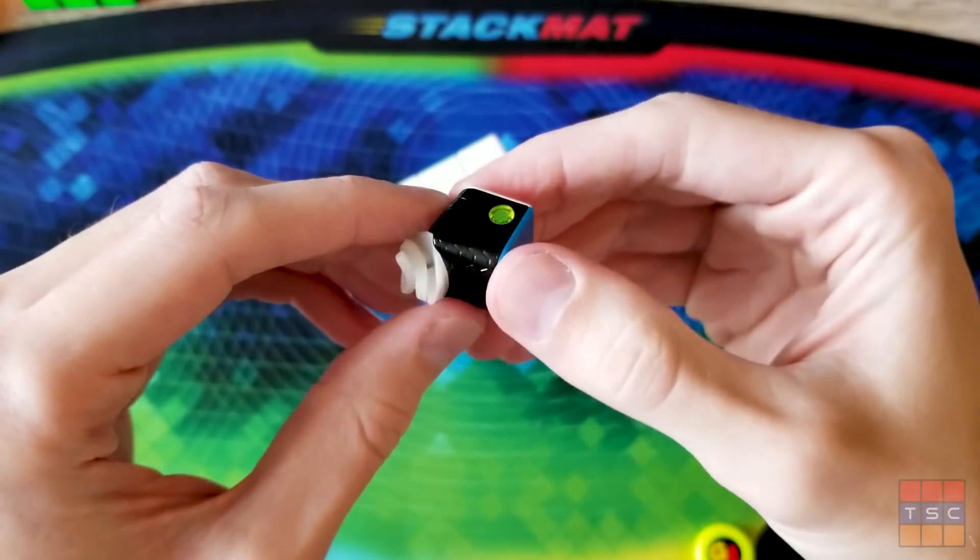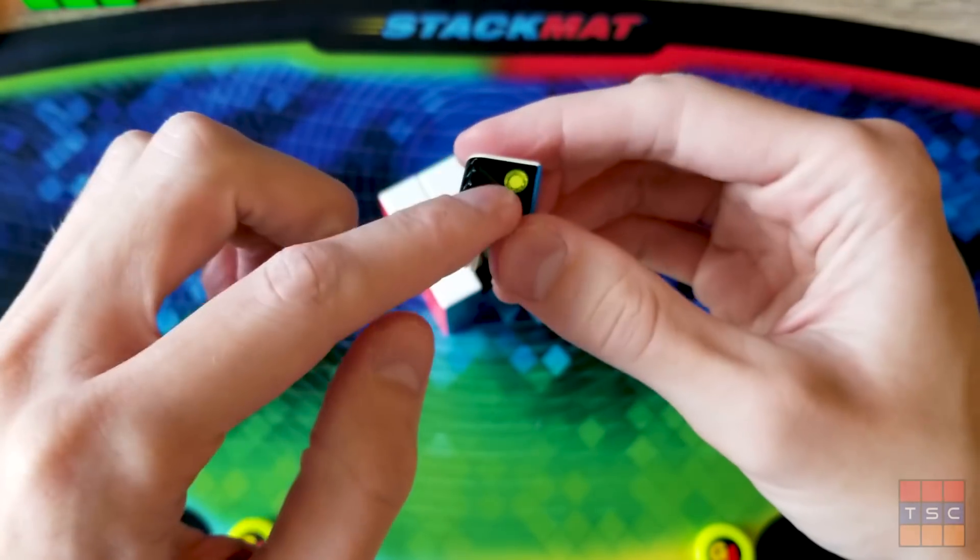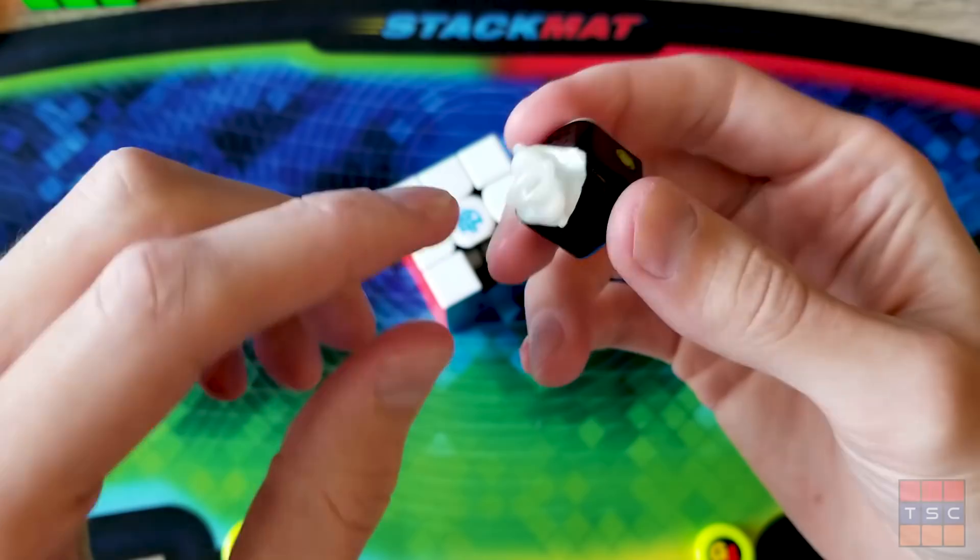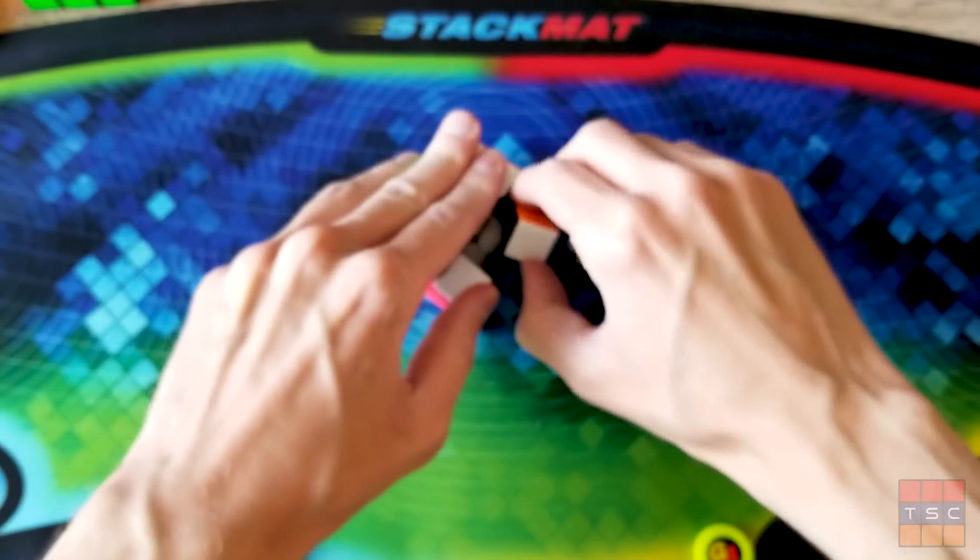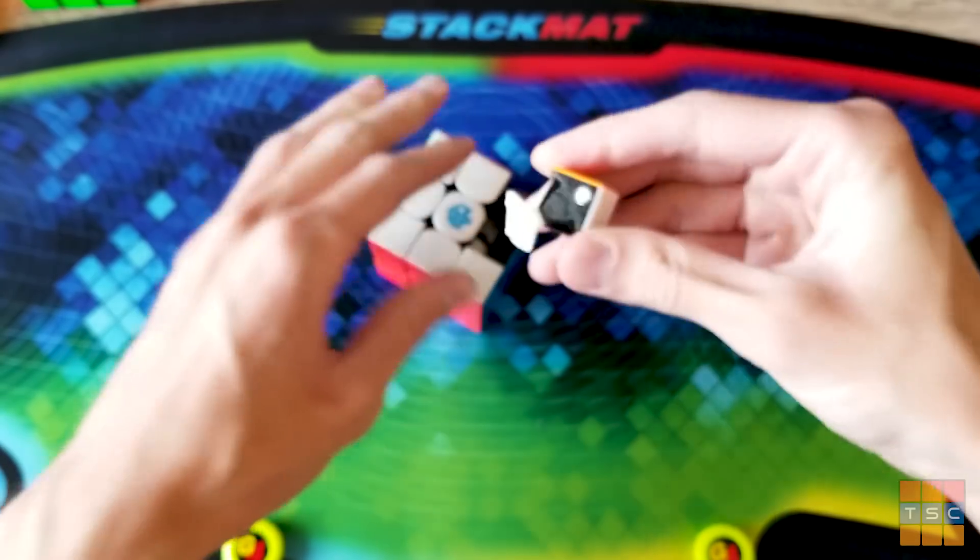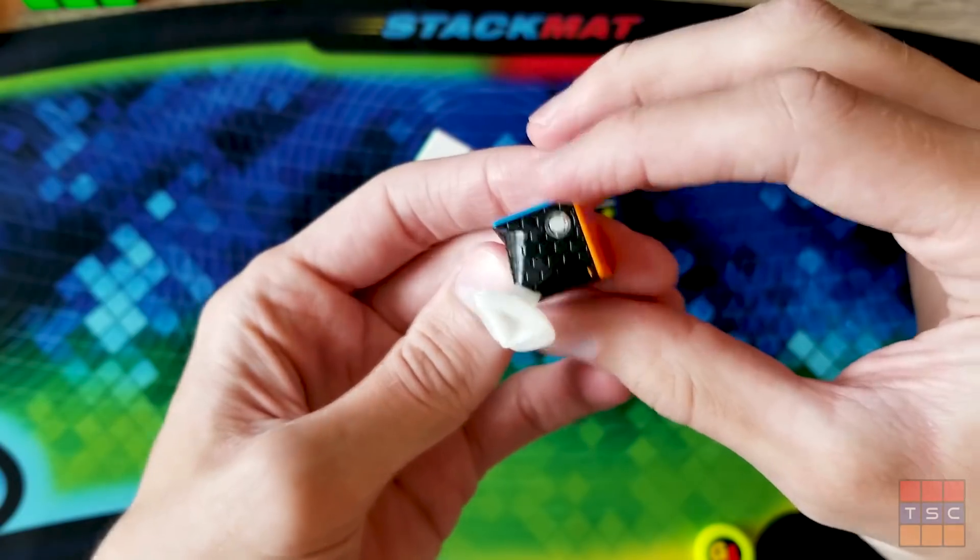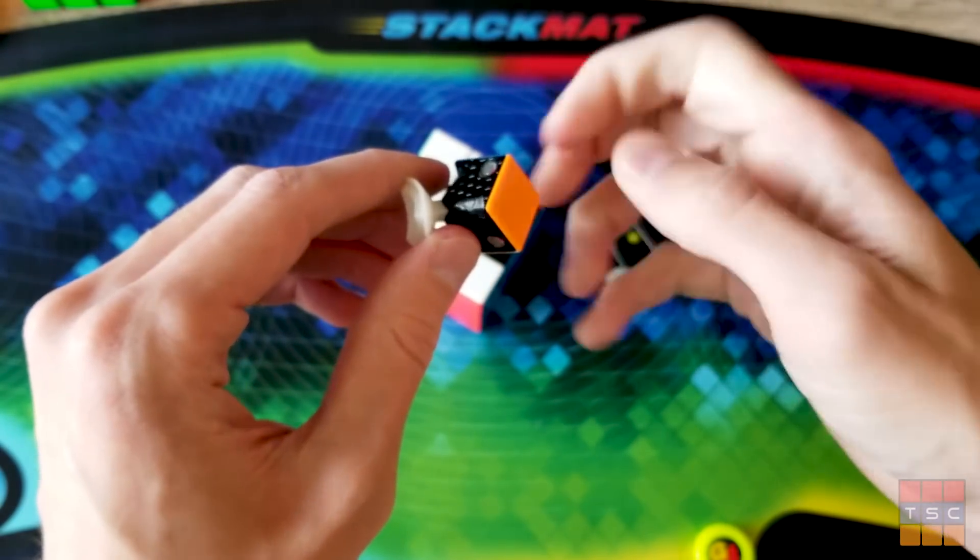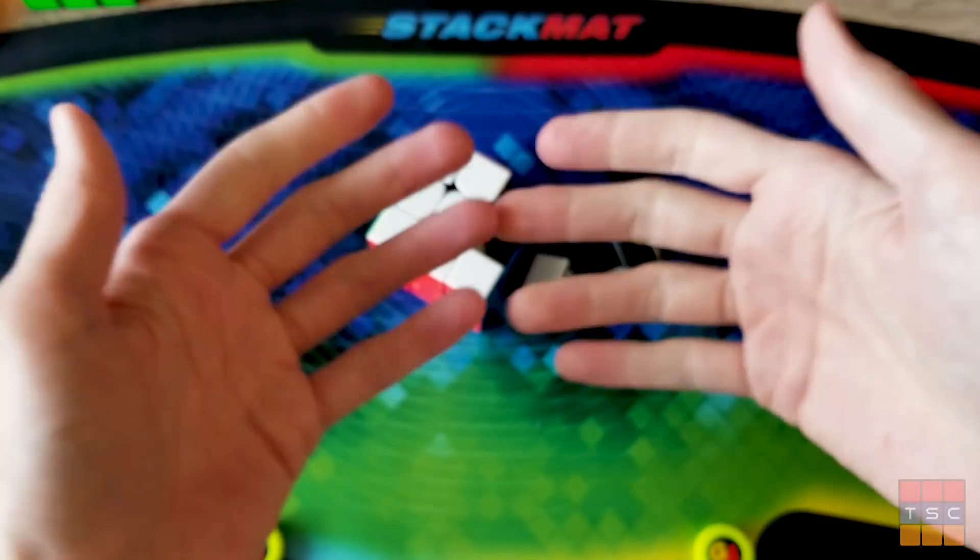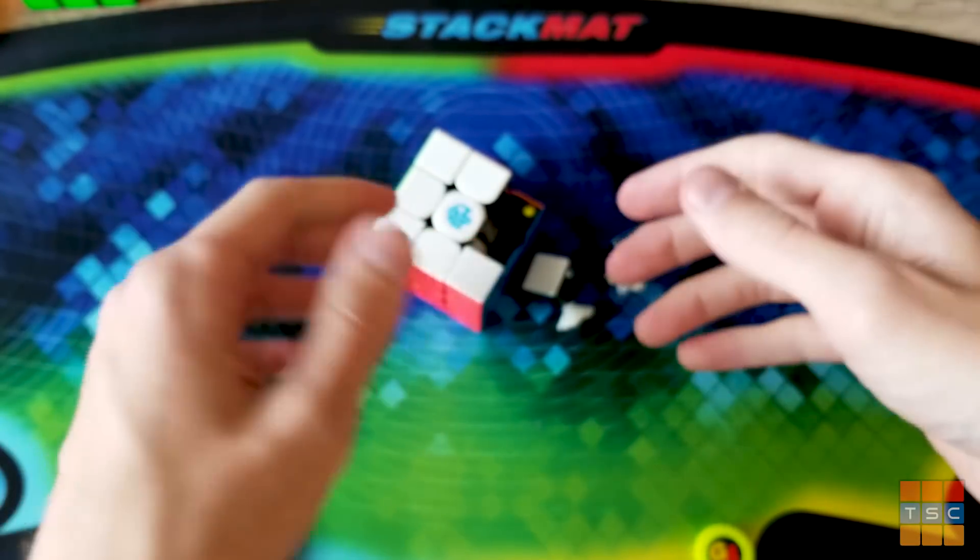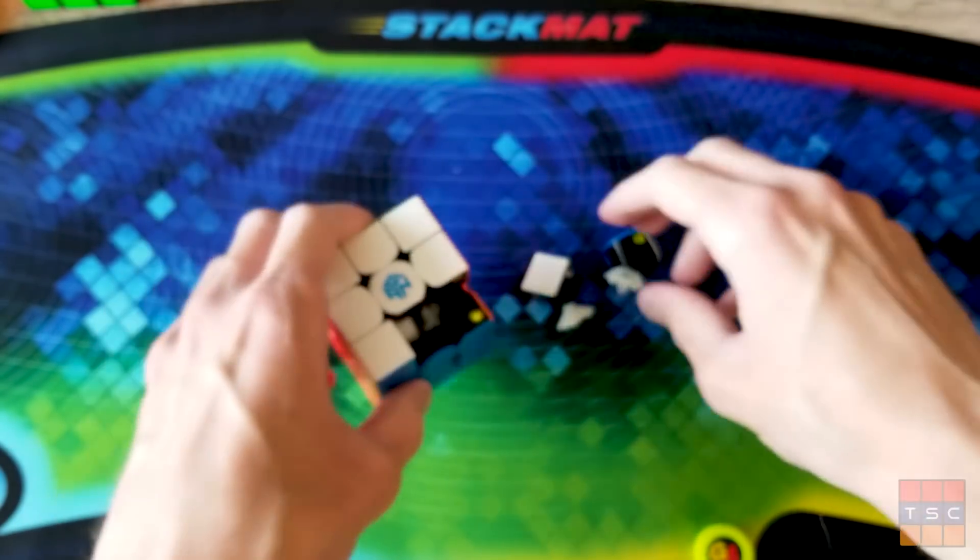So here we have an edge piece. We can see that standard honeycomb design. The magnets are placed right there. The black internals. It doesn't look like the torpedoes are any different at all from standard GAN pieces. Let's look at a corner here. Nothing too crazy about the corner either. Honeycomb design. The magnets are in the edge. There is a little bit of lube, a little bit of factory lube on there though. I'm definitely going to wipe it all off and put my own on there because it's just not slow enough. I really don't like how fast this thing is. And I think that's what's causing my lockups.